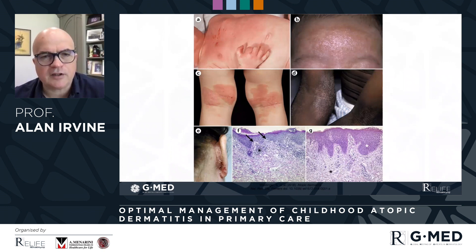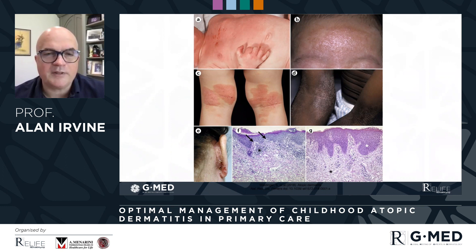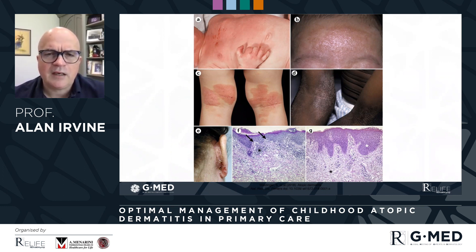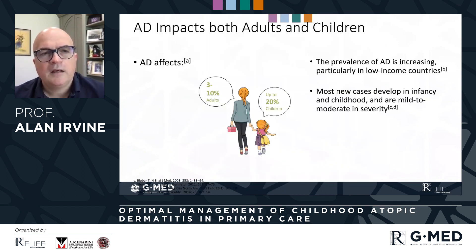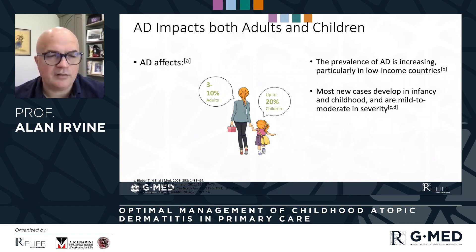We're all familiar that atopic dermatitis takes lots of different forms, from the generalized form that we see in infants to more specific flexural forms in young children. We're also aware that it has a great range of presentations that are ethnic dependent, so it behaves differently in different skin. Atopic dermatitis is common — it affects about 20% of children in the urbanized world.